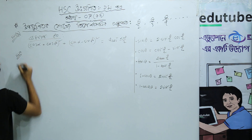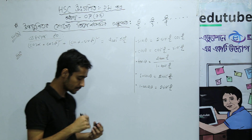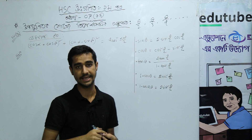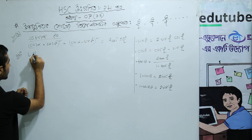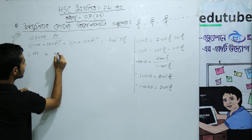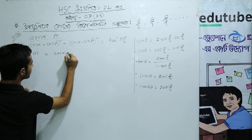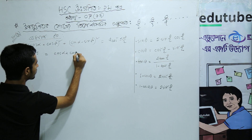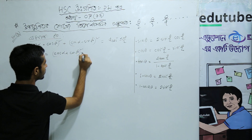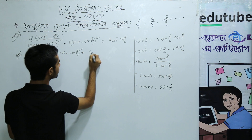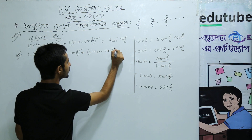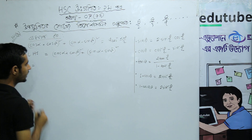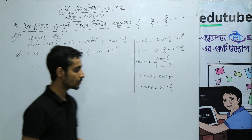The solution here is, what we can do is, we have the left hand side. Left hand side is cos alpha plus cos beta, whole square, plus sin alpha minus sin beta, whole square.